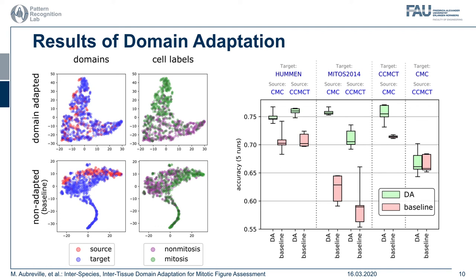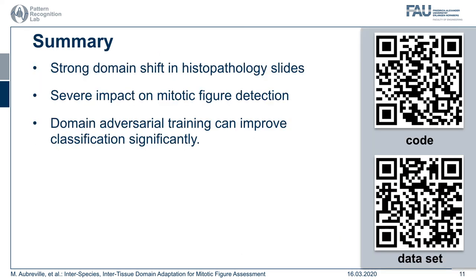As domain adversarial training is a form of adversarial training with strong similarities to generative adversarial networks, the same restrictions can apply. Although this is speculation, one underlying mechanism may be a vanishing gradient of the adversary due to the similarity of the datasets — which corresponds to the one condition where results did not improve but also did not deteriorate. In summary, we confirmed a strong domain shift in histopathology slides that at times yielded results close to guessing. We proposed domain adversarial training as an unsupervised method to circumvent this issue, significantly improving results across various conditions.